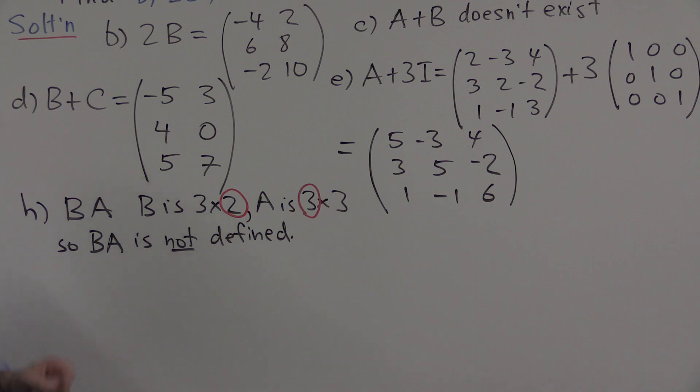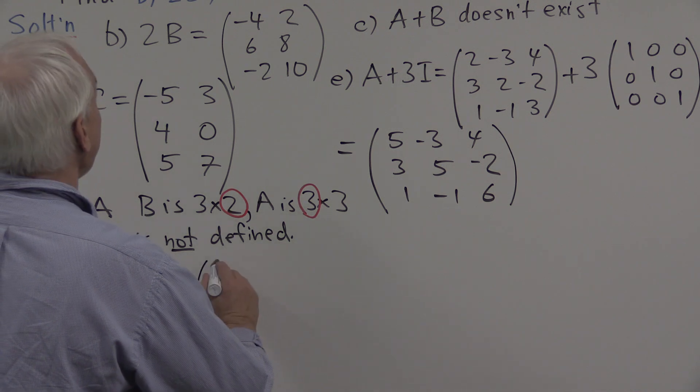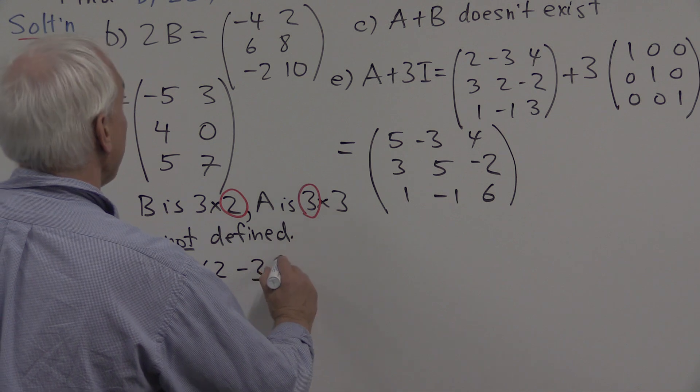So having said that, let's have a look at the order in the other way around. A times B, which is actually part G of this question. Here we have a 3 by 3 matrix, that's A, and B is a 3 by 2 matrix. In this case, these two numbers here, they do agree. And so the product is defined. So let's just see how that product goes. It's very important to know how to multiply matrices.